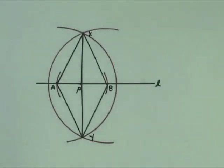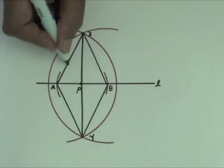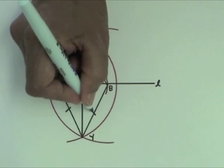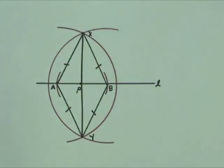These line segments are radii of circles that were drawn using the same compass width. So AX, BX, AY, and BY are equal in length.